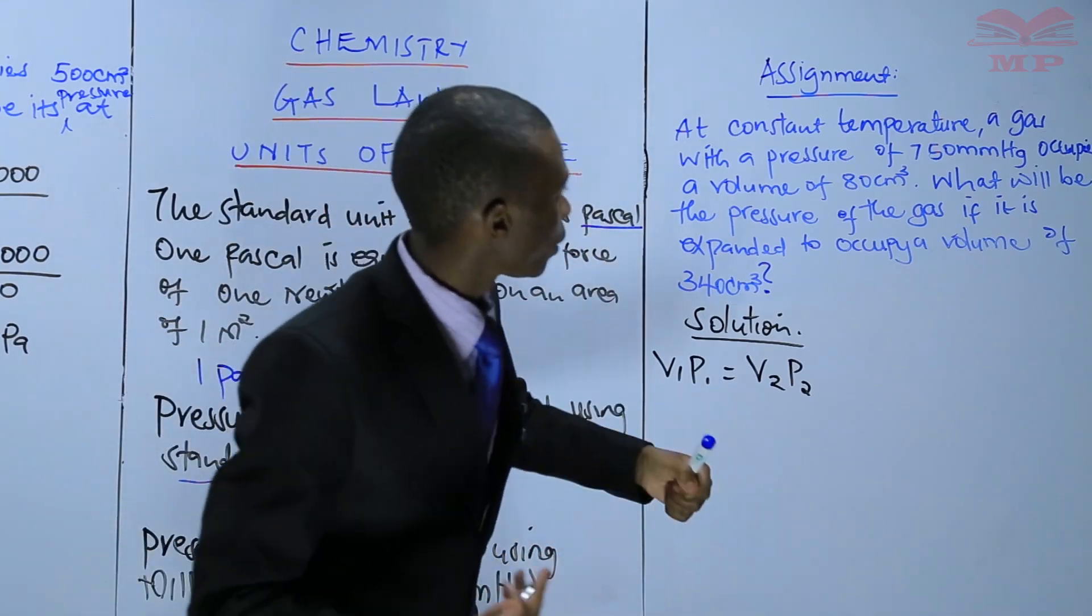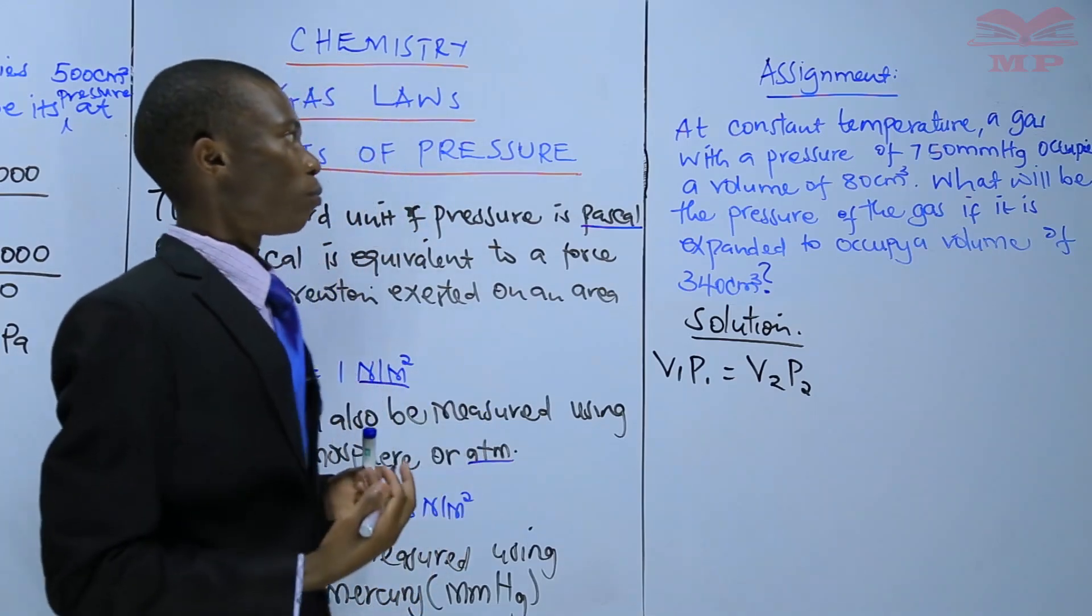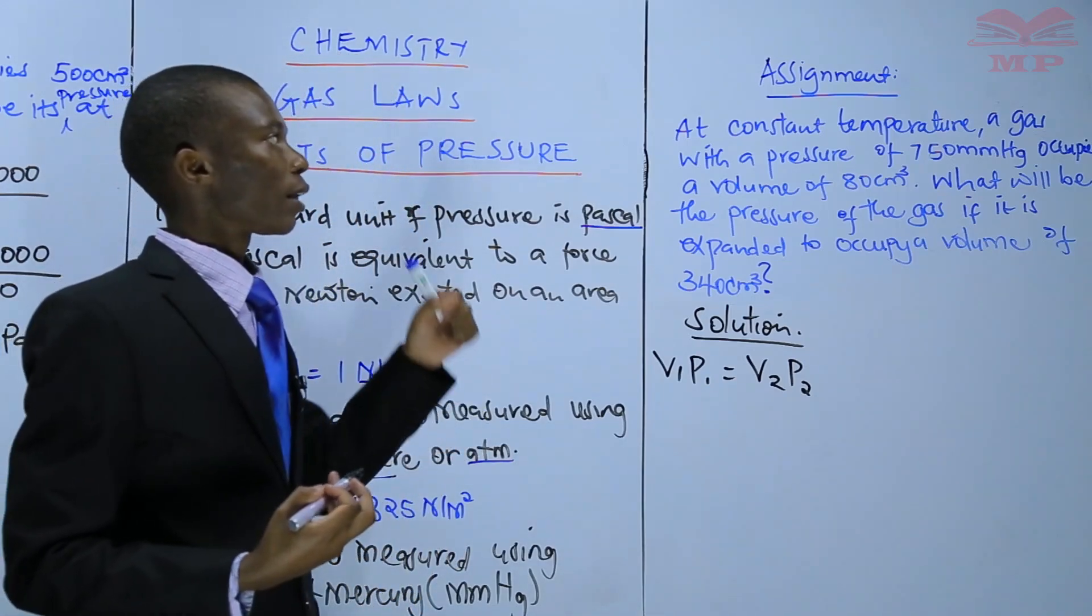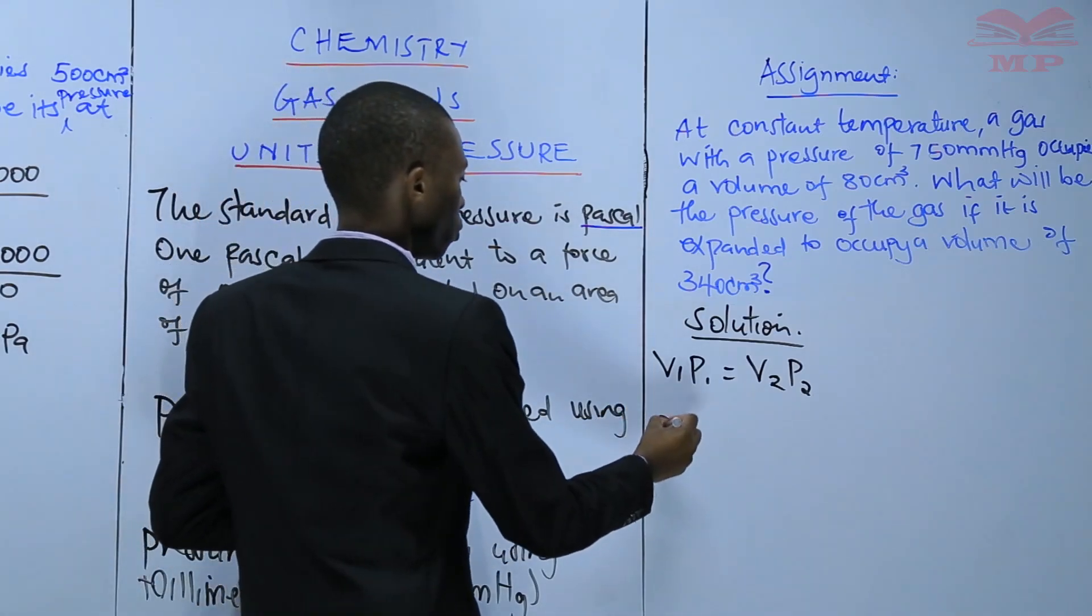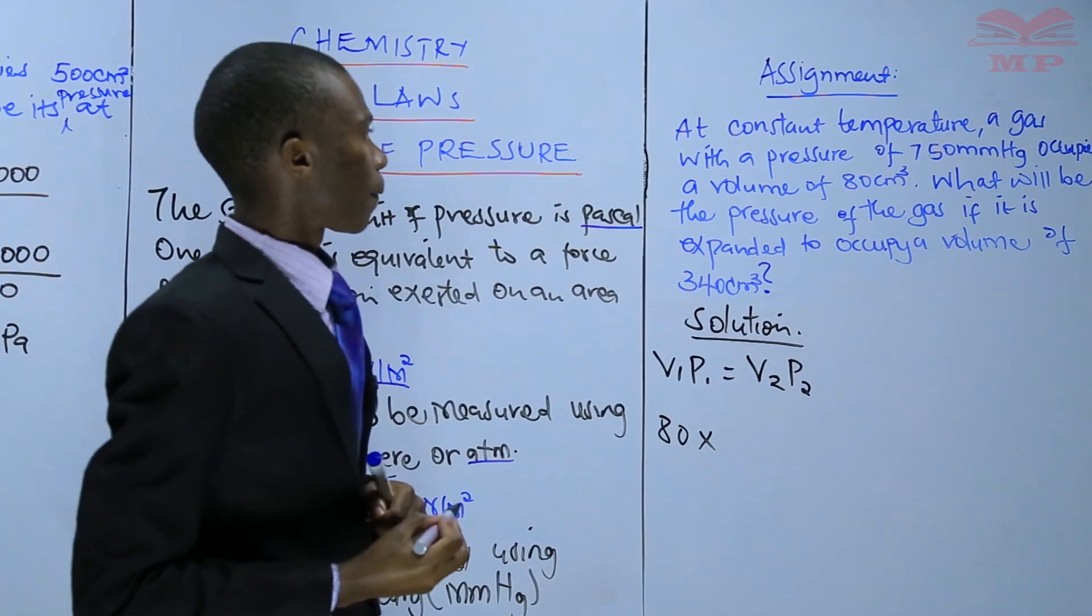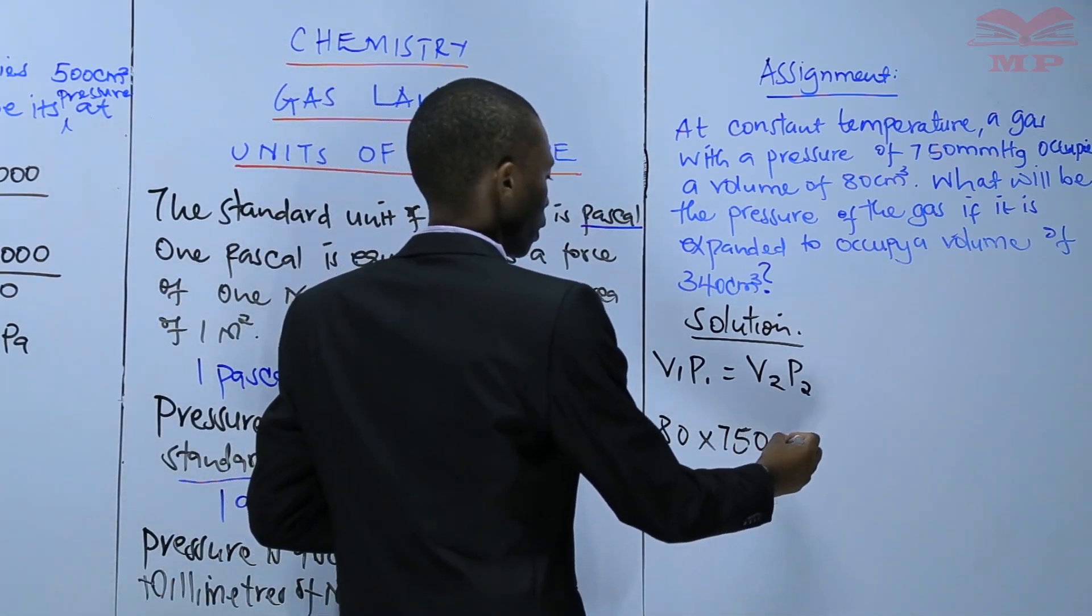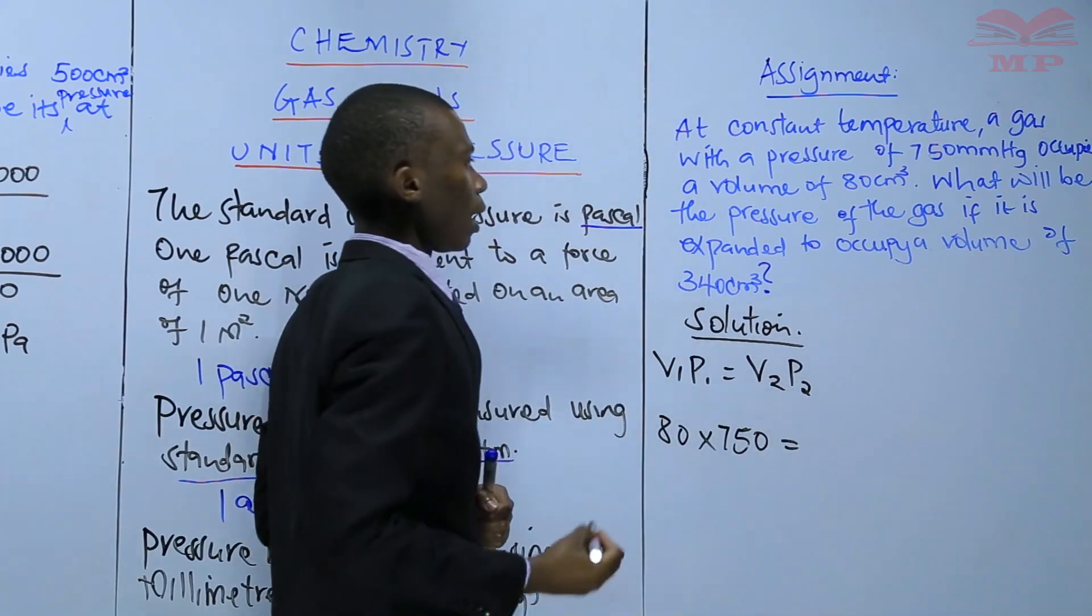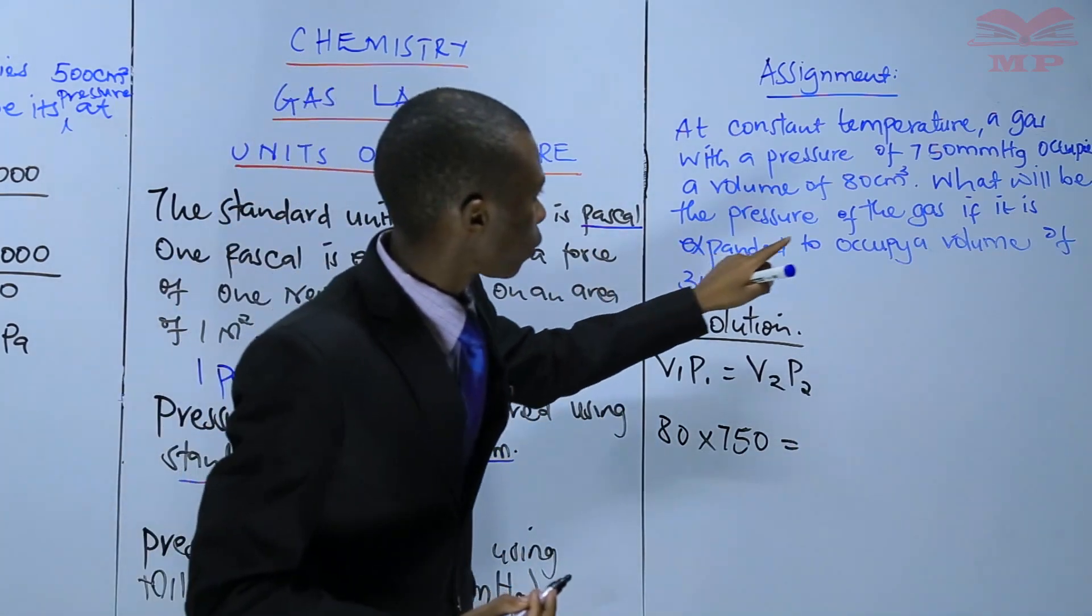At constant temperature, a gas with a pressure of 750 millimeters of mercury occupies a volume of 80 centimeters cubed. Therefore, volume 1 is 80 centimeters cubed, multiplied by the initial pressure, which is 750 millimeters of mercury.